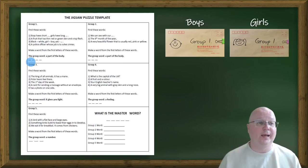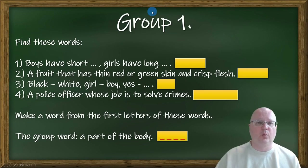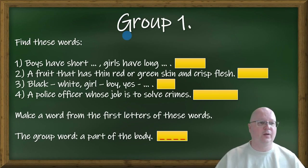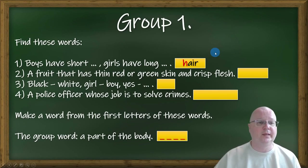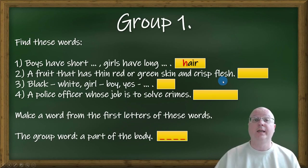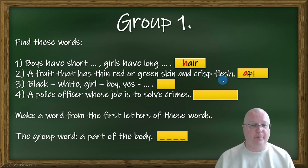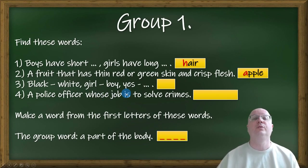Now let's go through each card and take a look at how these puzzles are solved. Card number one — group number one. They need to find these words: boys have short and girls have long hair — the answer is hair. A fruit that has thin red or green skin and crisp flesh is an apple. Black to white, girl to boy, yes to no.